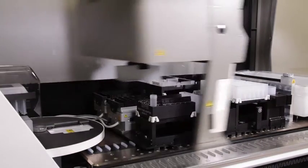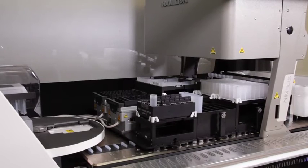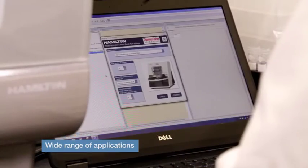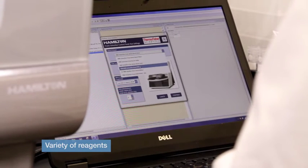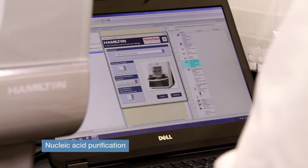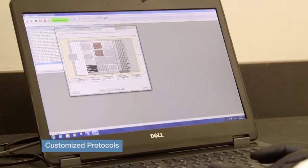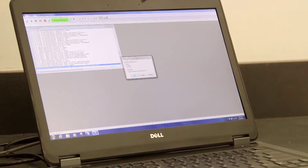The Kingfisher Presto system can be used for a wide range of applications and works with a variety of reagents, including Invitrogen and Applied Biosystems kits. Users can optimize their own protocols as needed for added flexibility.